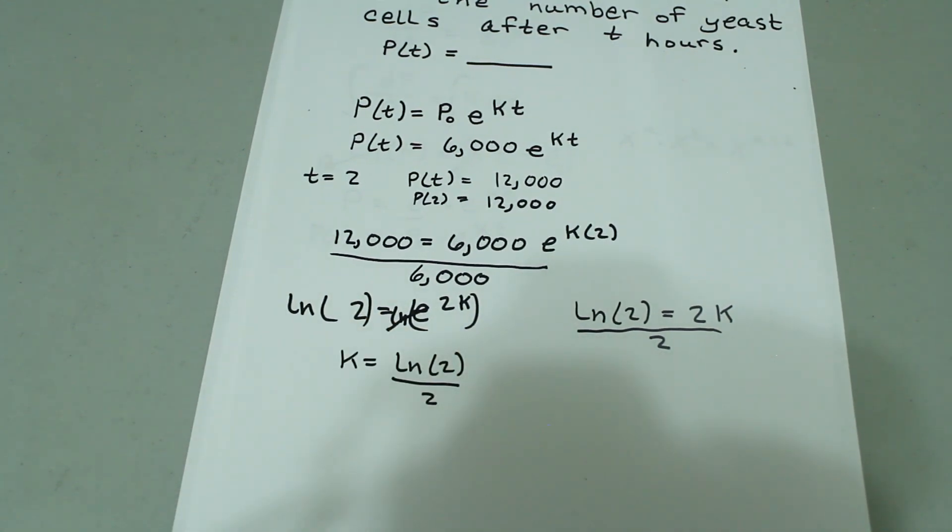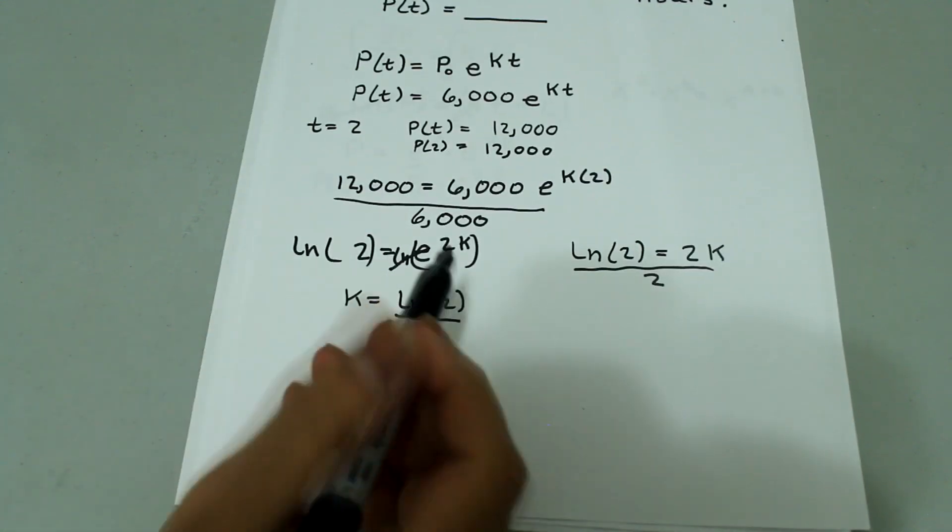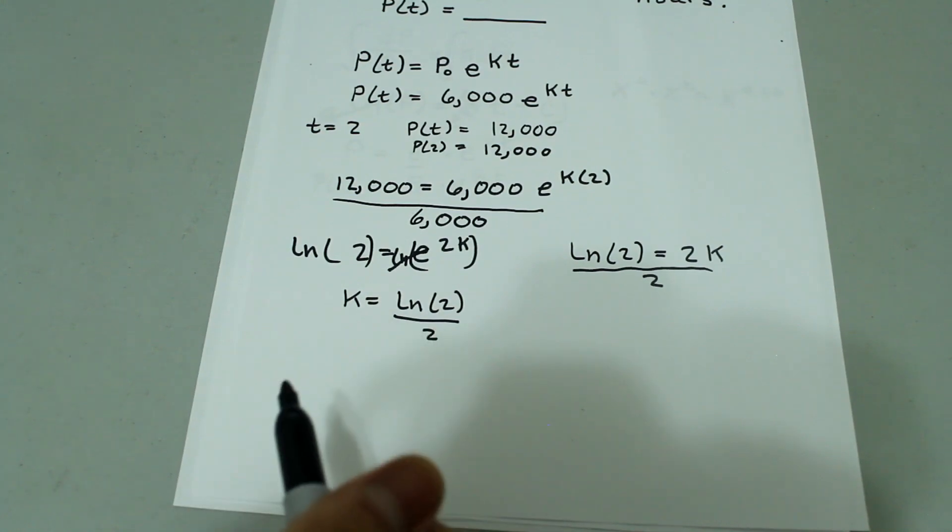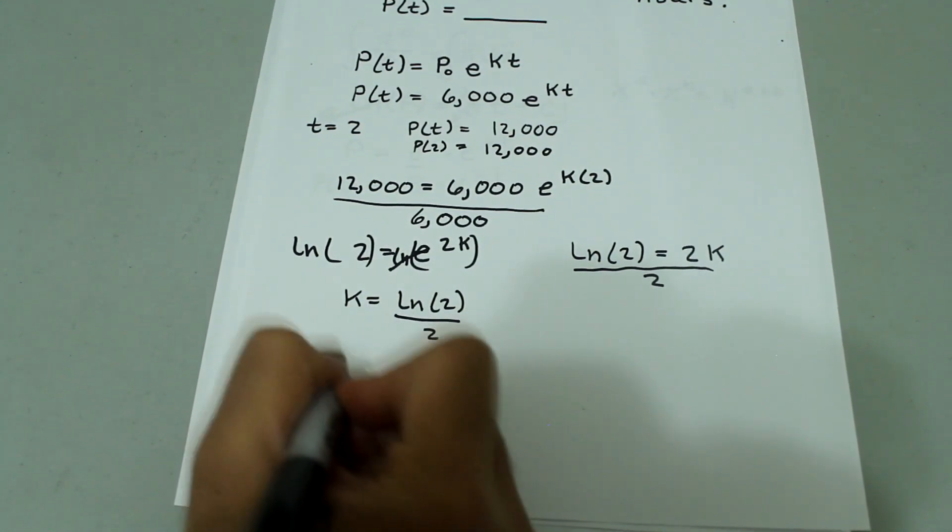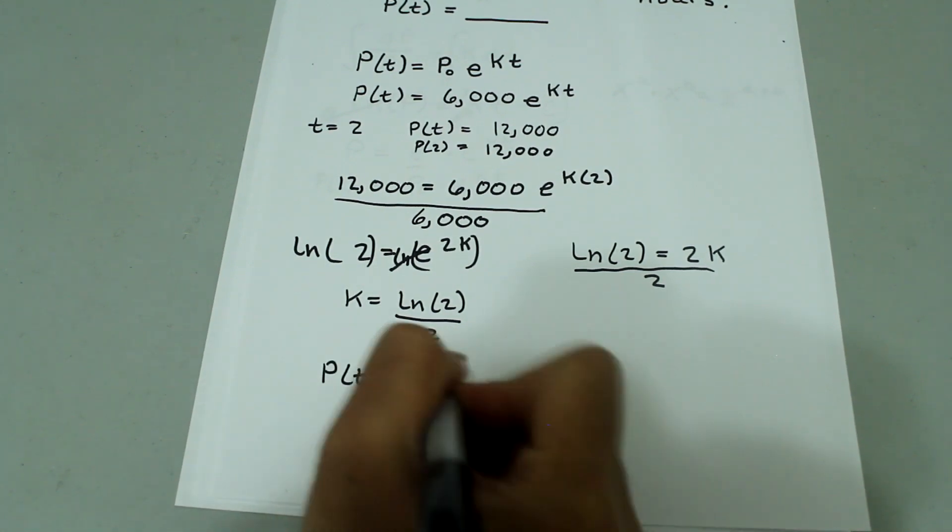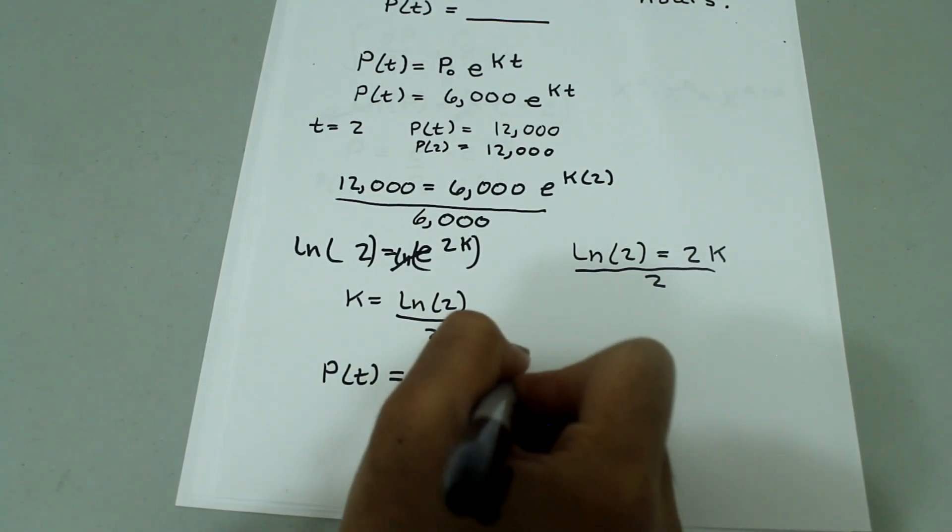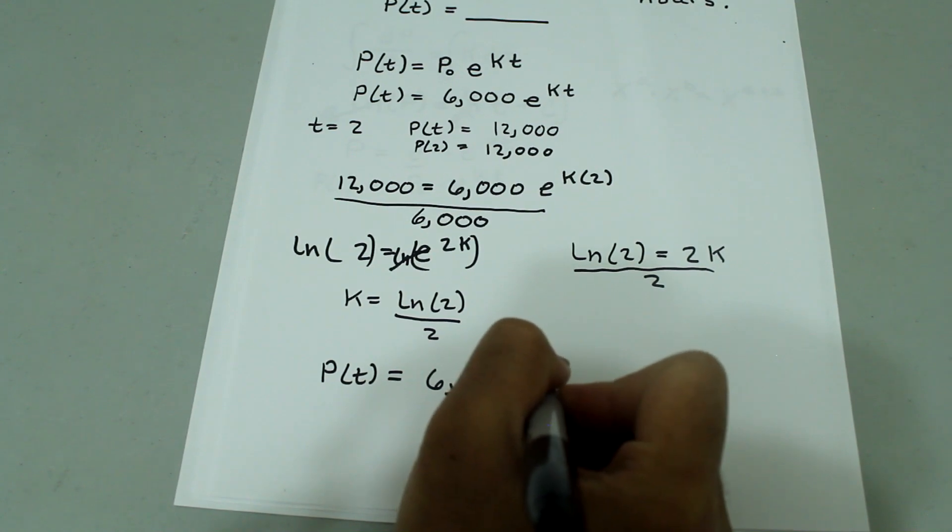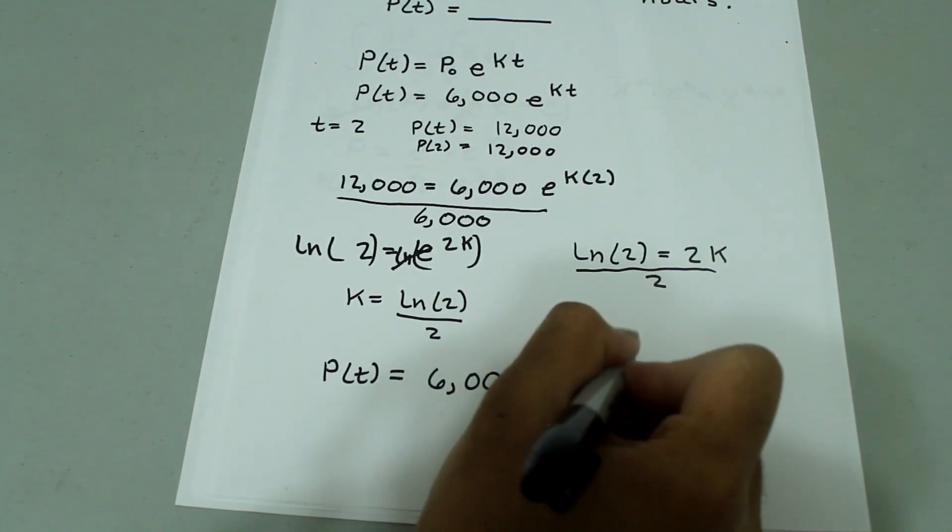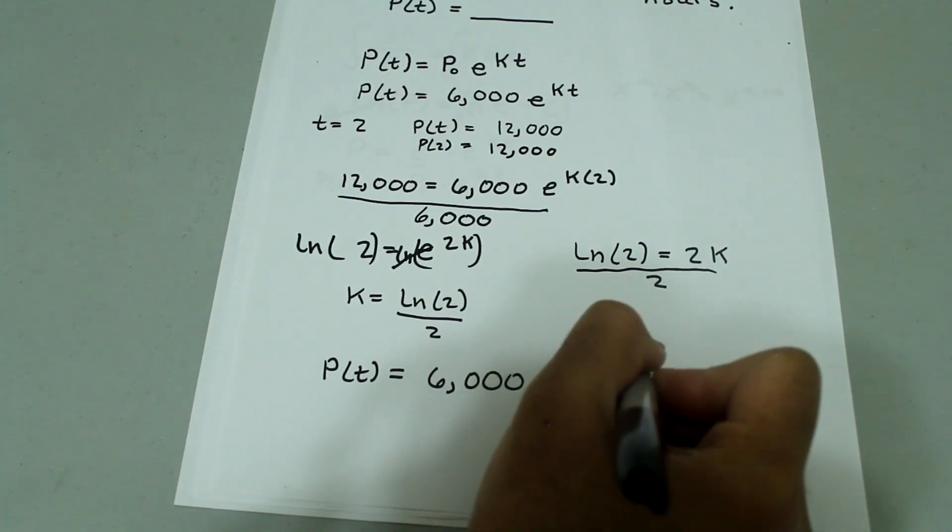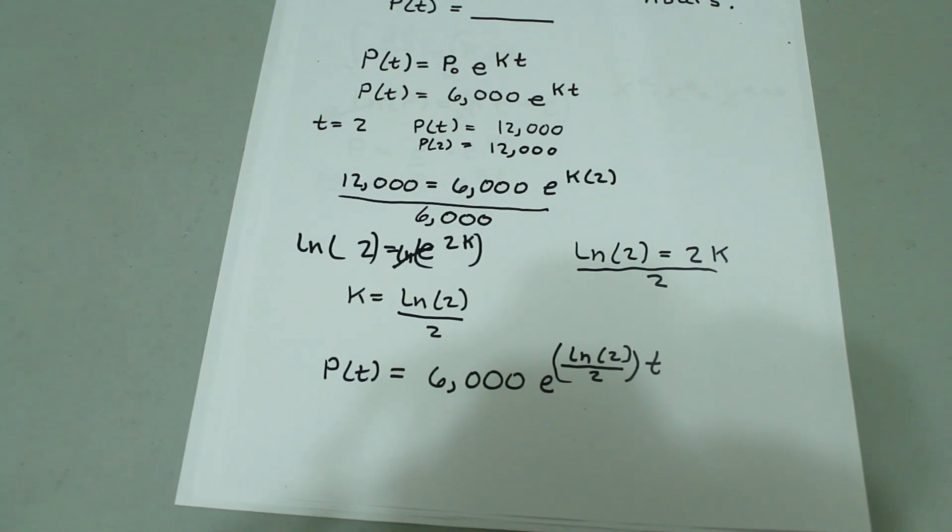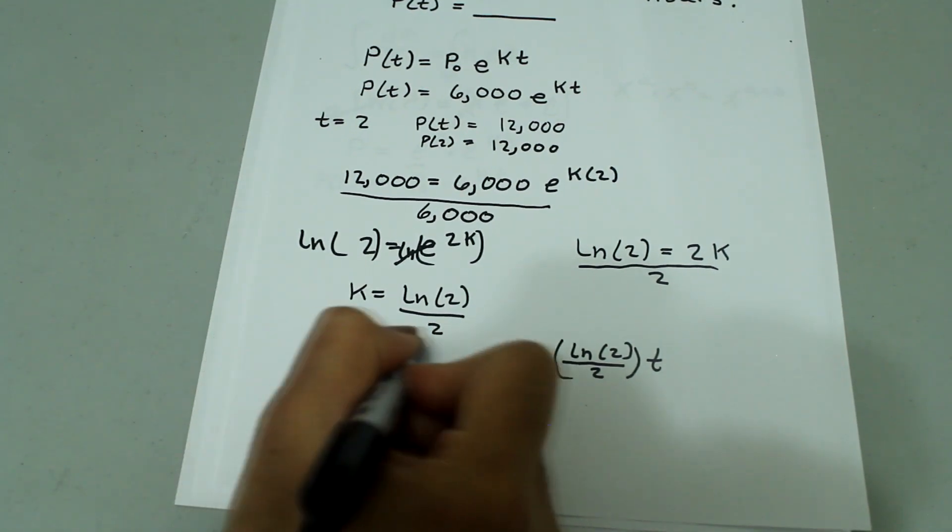Now we can write the final expression, which will be P(t) is equal to 6,000 times e to the natural log of 2 over 2 times t. And that's the answer for number 1.